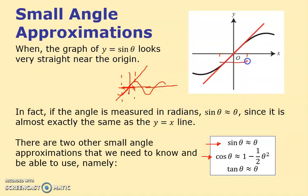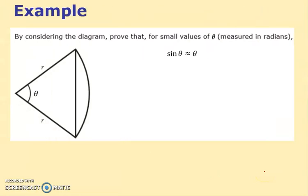For small values of theta, sine theta is roughly theta. If you drew the tan graph, it does something like this — again you can quite happily say it looks quite straight, and that's why we get tan theta is roughly theta as well. These three you're meant to know and be able to use. For the proof of these we use some work we've done previously on sectors.